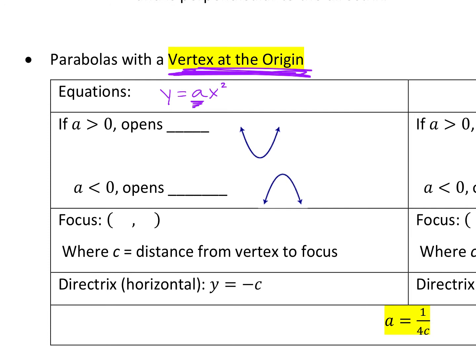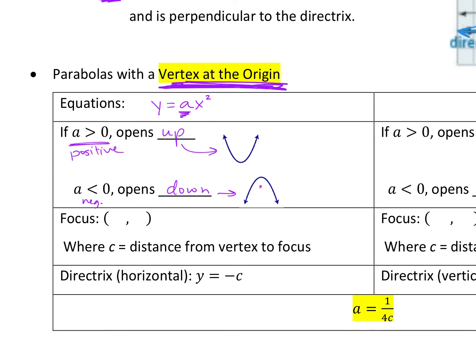If your a value is positive, your parabola is going to open up. If it's negative, it's going to open down. The focus of your parabola — remember focus is going to be a point somewhere inside of your parabola — that focus is always going to be the point (0, C). C is always going to be the distance from your vertex to your focus.